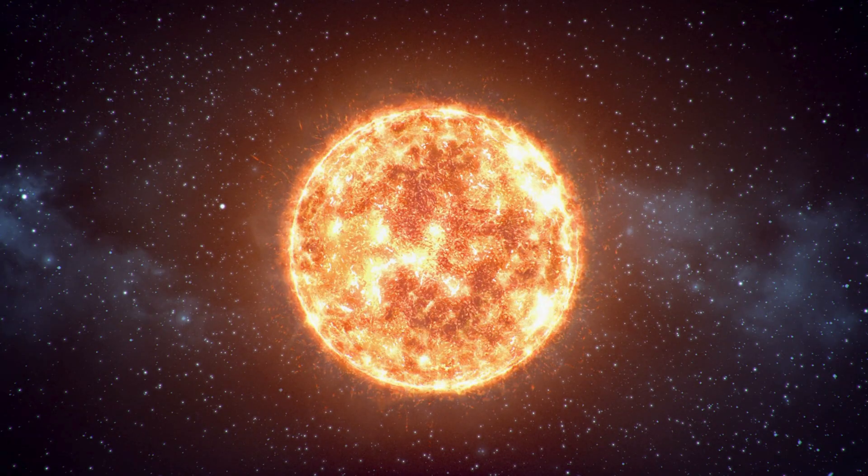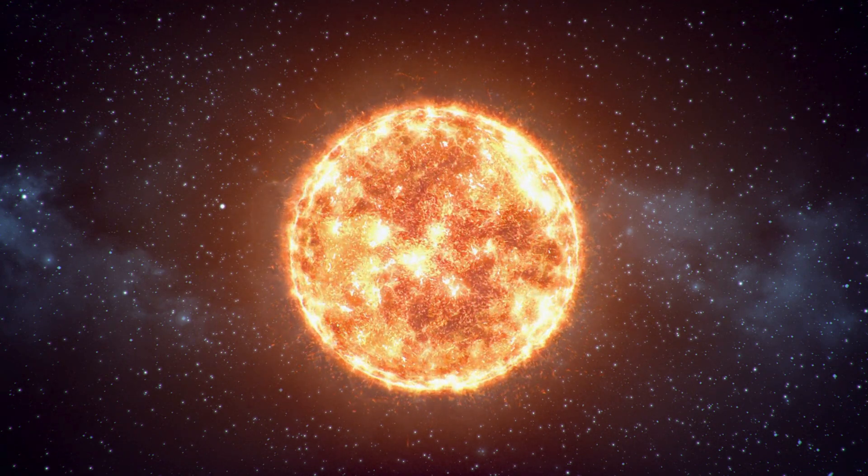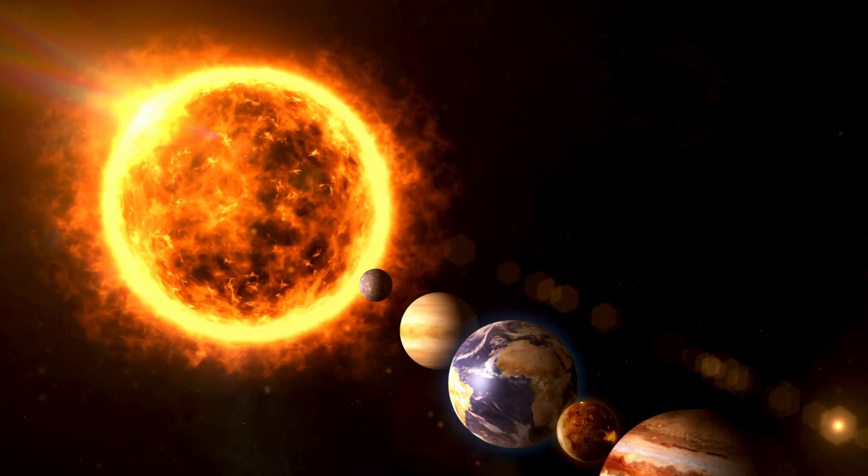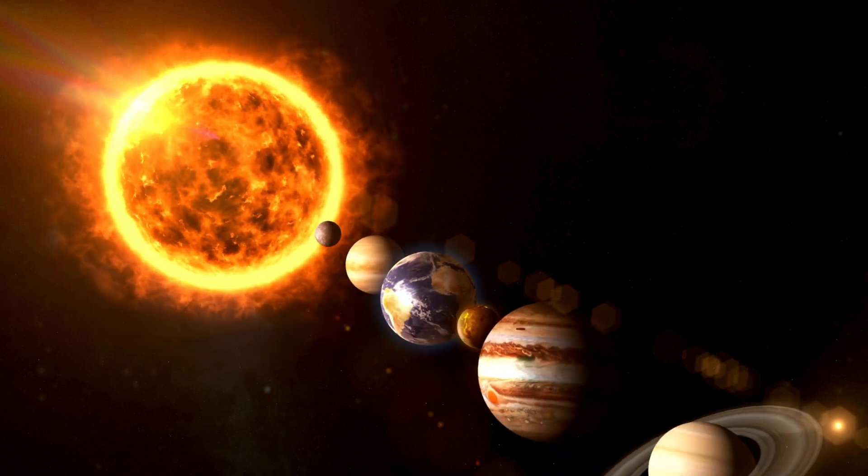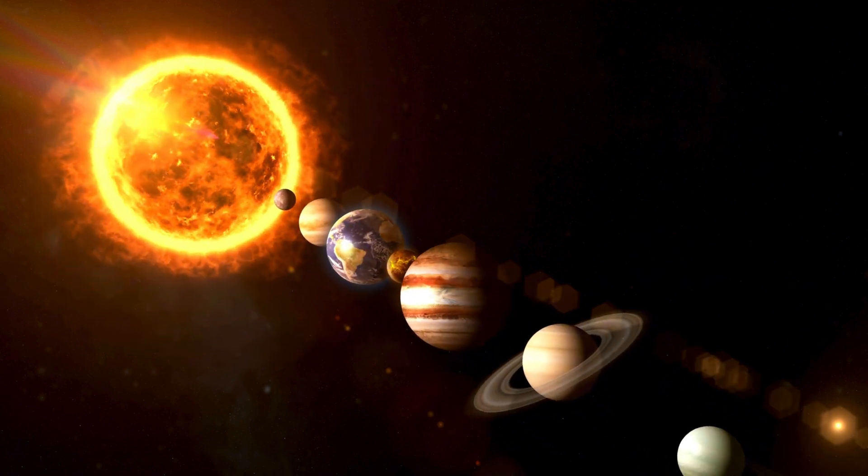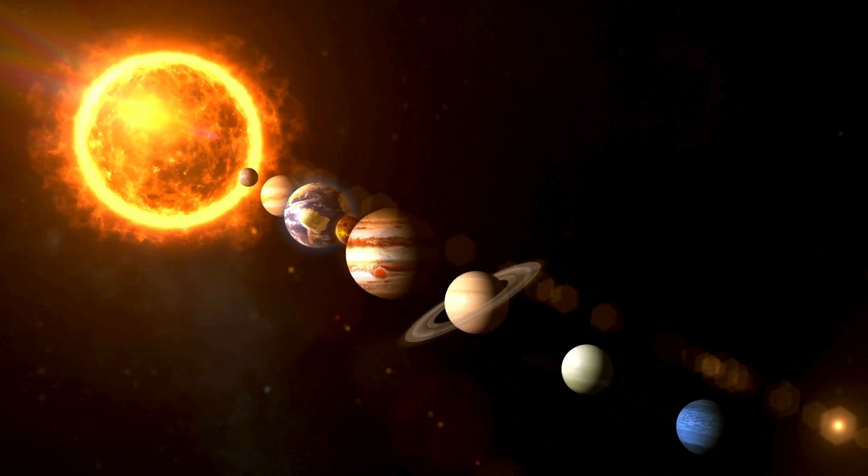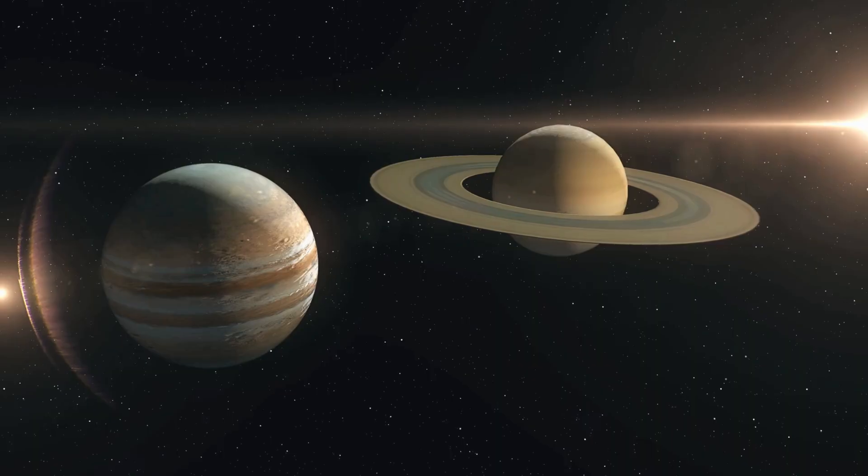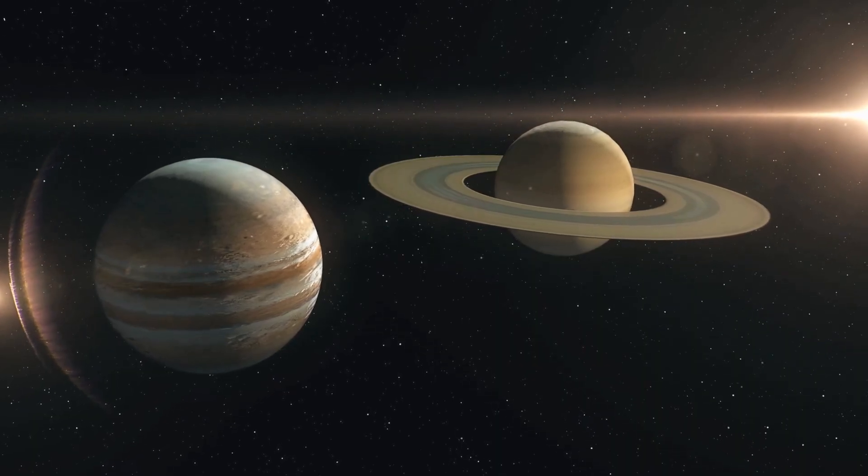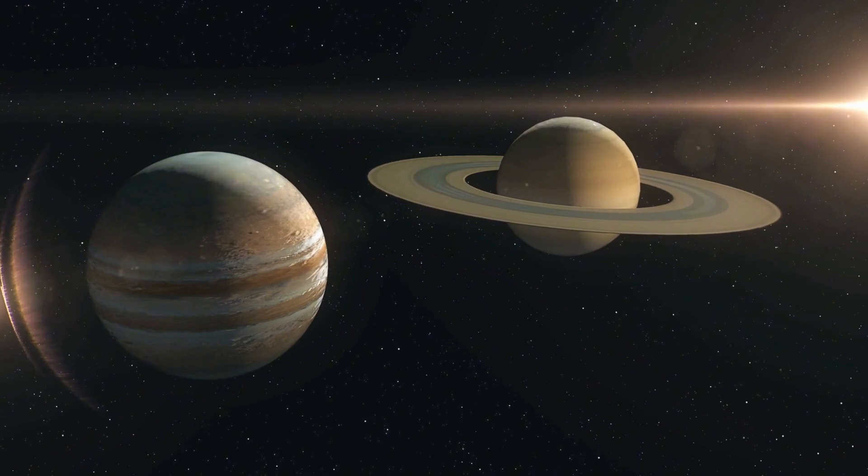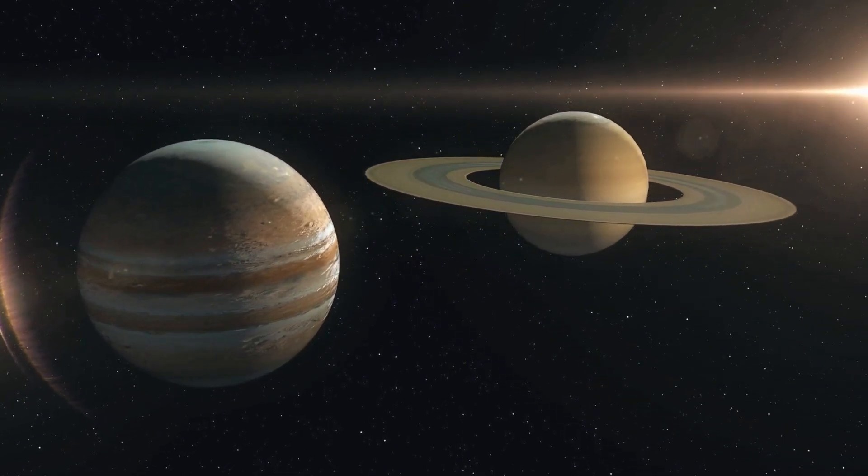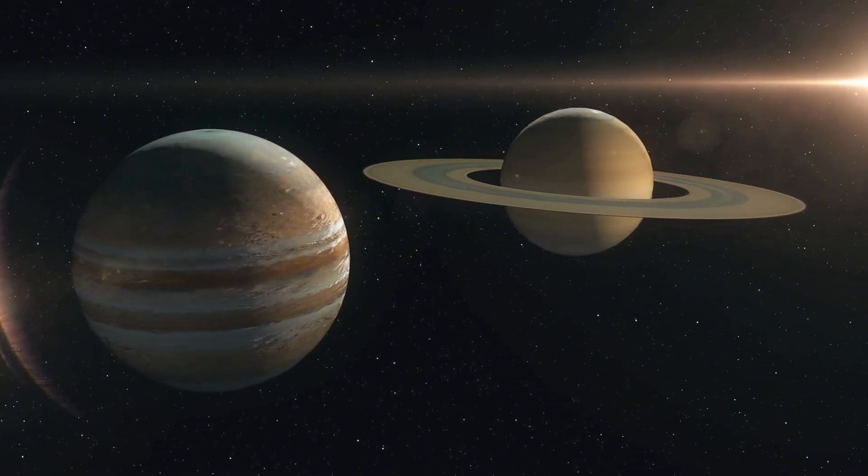forming the planets, moons, and other bodies that make up our solar system. Closer to the sun, rocky planets like Mercury, Venus, Earth, and Mars formed from heavier elements. Further out, in the colder regions of the system, gas giants like Jupiter and Saturn formed, gathering huge amounts of hydrogen and helium.